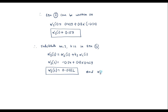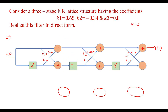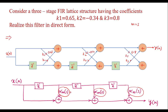α_3(3) equal to k3 equal to 0.8. Therefore, the direct form coefficients are: α_3(1) equal to 0.157, α_3(2) equal to 0.0032, and α_3(3) equal to 0.8. This is the direct form structure. Thank you for watching.